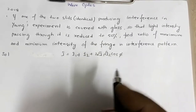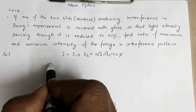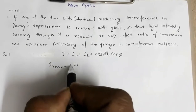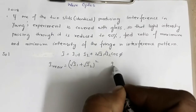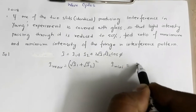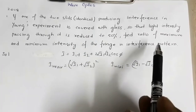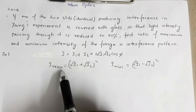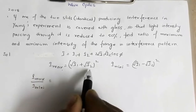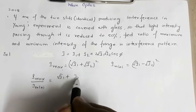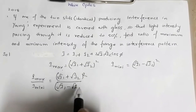where φ is the phase difference. The maximum intensity is given by (√i1 + √i2)², and the minimum intensity is given by (√i1 − √i2)². So i_max / i_min = (√i1 + √i2)² / (√i1 − √i2)².